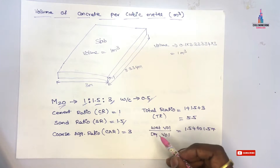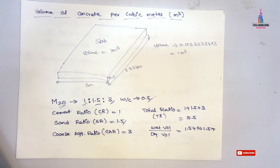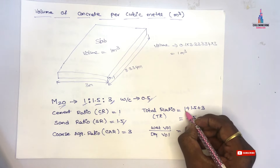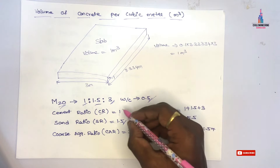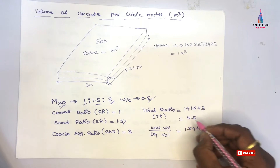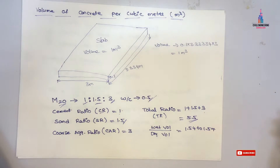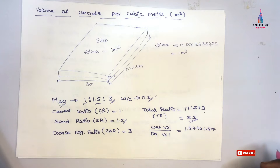Initially we need to calculate the total ratio, which is the sum of the cement ratio, sand ratio, and coarse aggregate ratio. So the total ratio equals 1 plus 1.5 plus 3, which equals 5.5. This 5.5 is the total ratio related to M20 grade concrete.